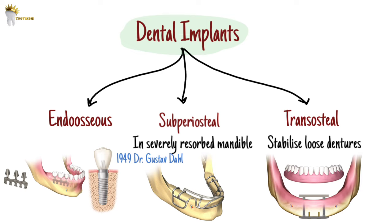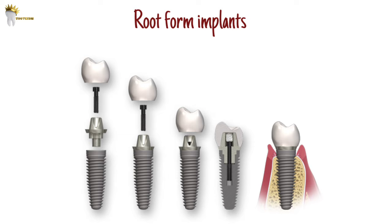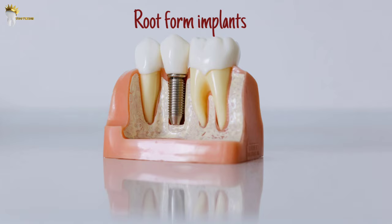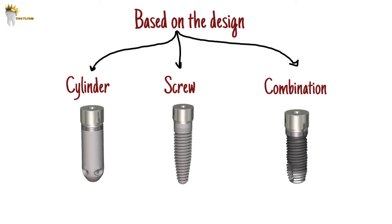Root form implants are a category of endosteal implants designed to use a vertical column of bone, similar to the root of a natural tooth — that's why they are called root form implants. Based on their design, there are three different types: cylinder, screw, or a combination of both.